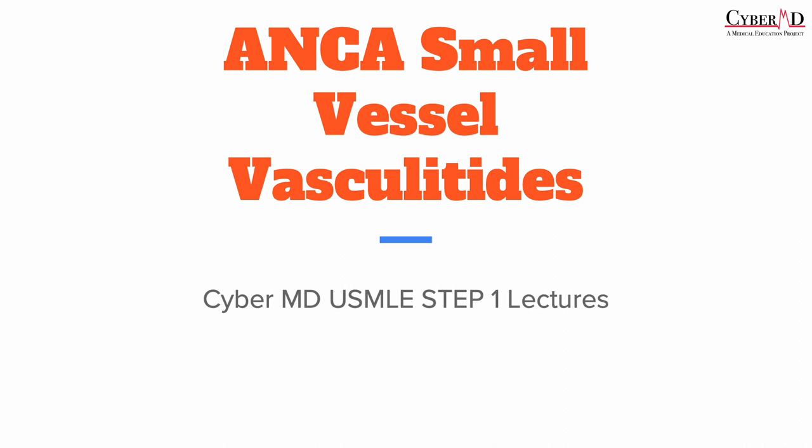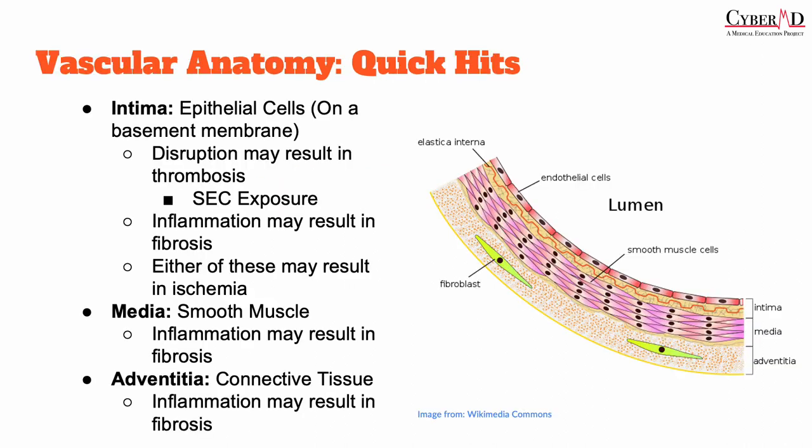Before we get started, let's quickly review vascular anatomy. First, let's talk about the layers of the blood vessel wall. The innermost layer is called the intima, which is made up of epithelial cells that rest on a basement membrane. Moving on to the middle layer of the vessel wall, known as the media, it is composed of smooth muscle cells.